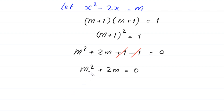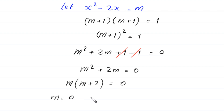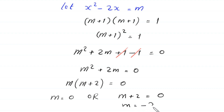From the left-hand side, we factor out m as a common factor: m(m + 2) = 0. Therefore either m = 0 or m + 2 = 0, giving m = -2. So we have two values of m: m = 0 and m = -2.